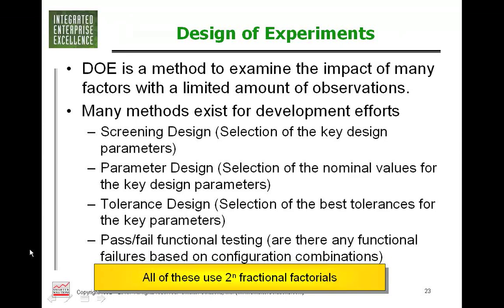In parameter design, we want to determine the nominal value — the optimal setting for particular design parameters. This could be the temperature of a process or a particular dimension. For tolerance design, we ask how tight or how loose should the tolerance be? You can kind of look at this and say, if you're not careful, this could be a big monster of a test.